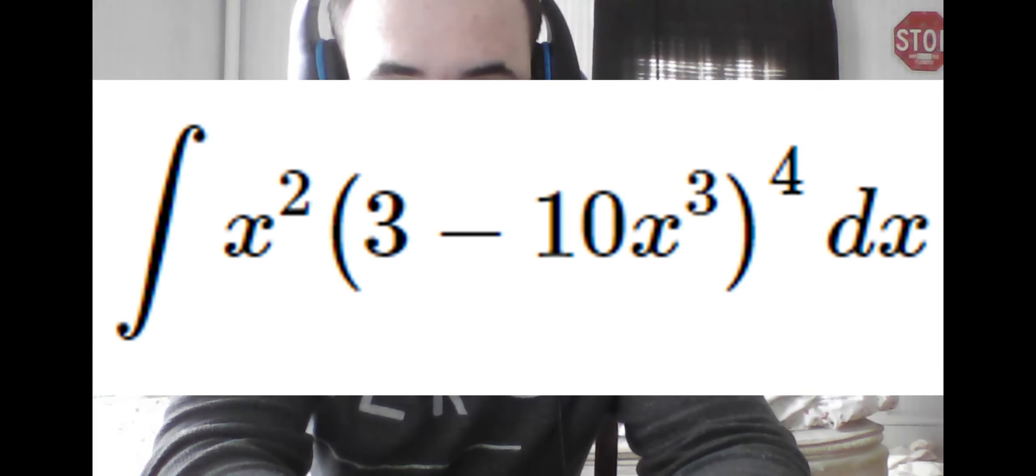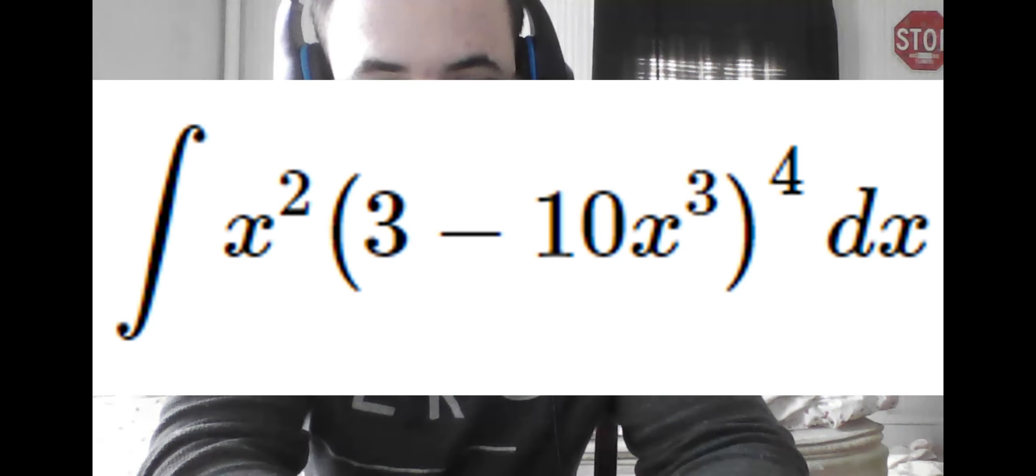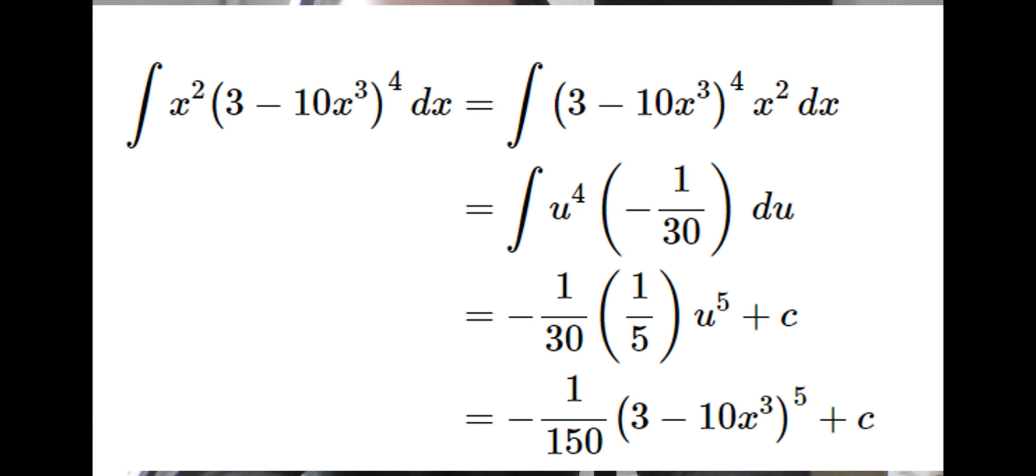However, in the original integral, there is no negative 30 given for you. But what you can do is use some trickery to state, x squared times change in x equals negative 1/30 times change in u. So we plug this in where appropriate in the integral, as well as u that we found earlier.